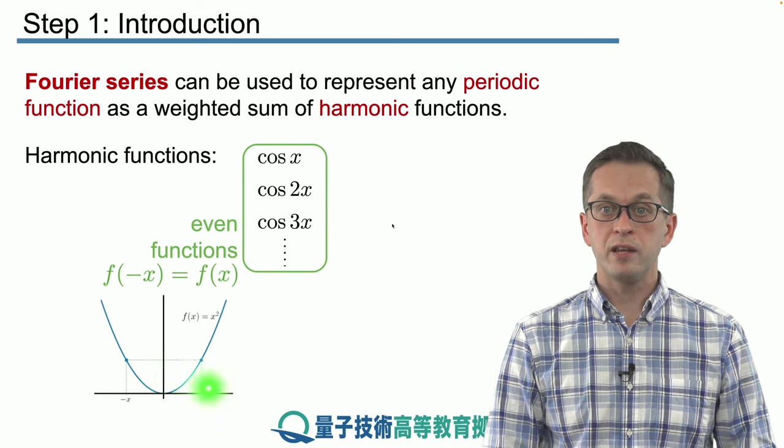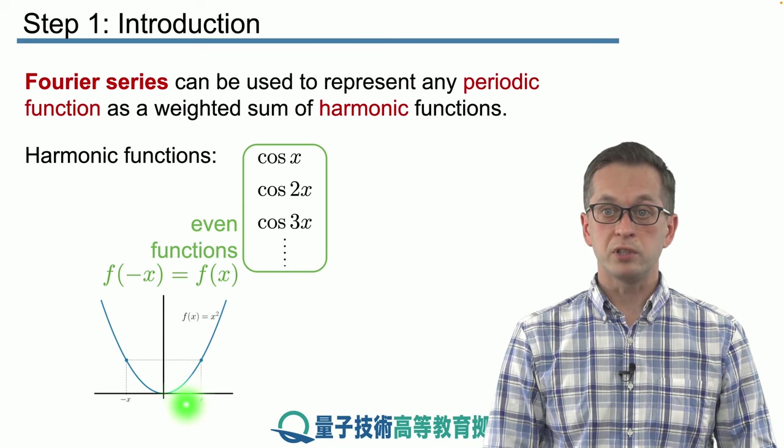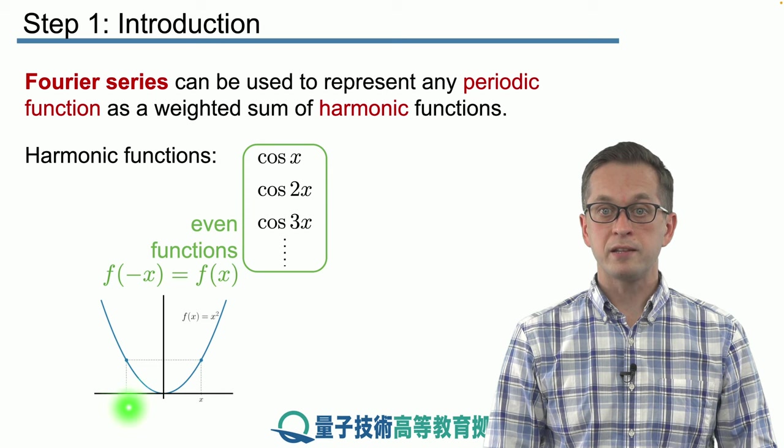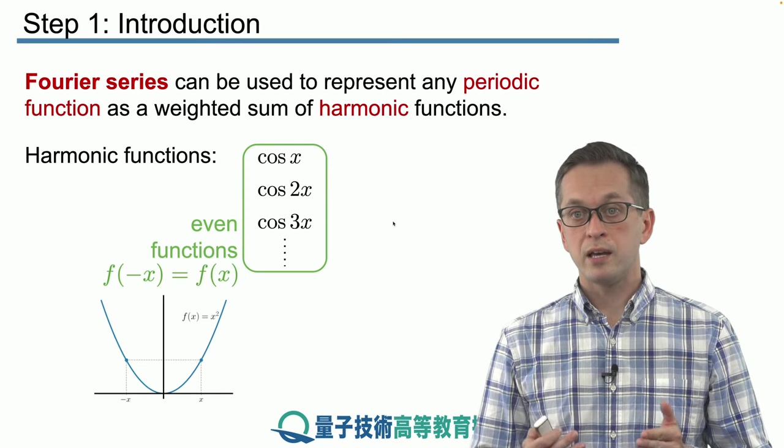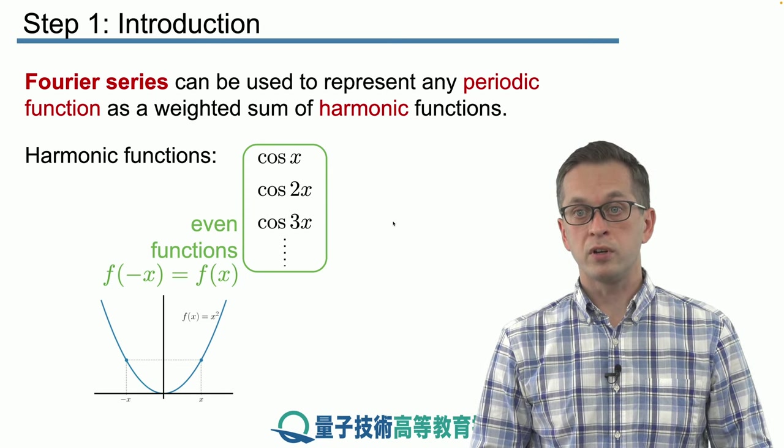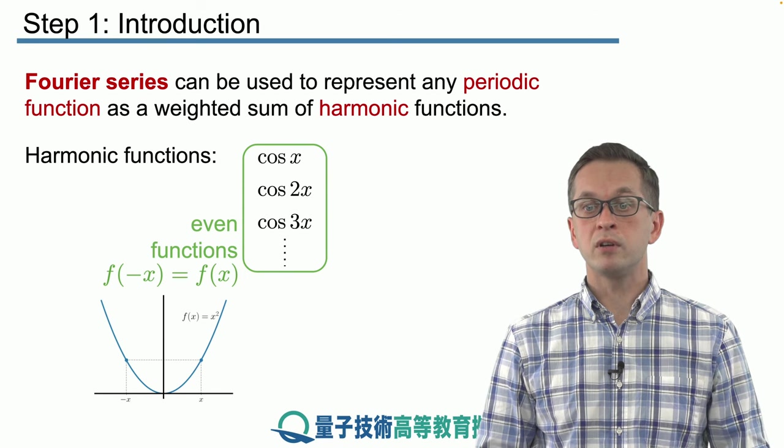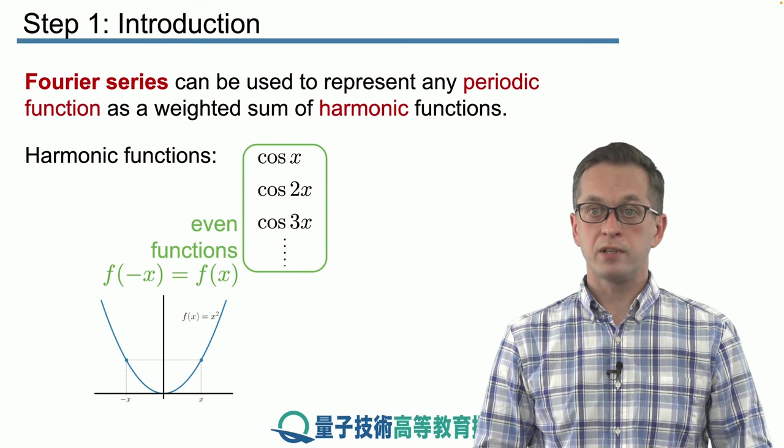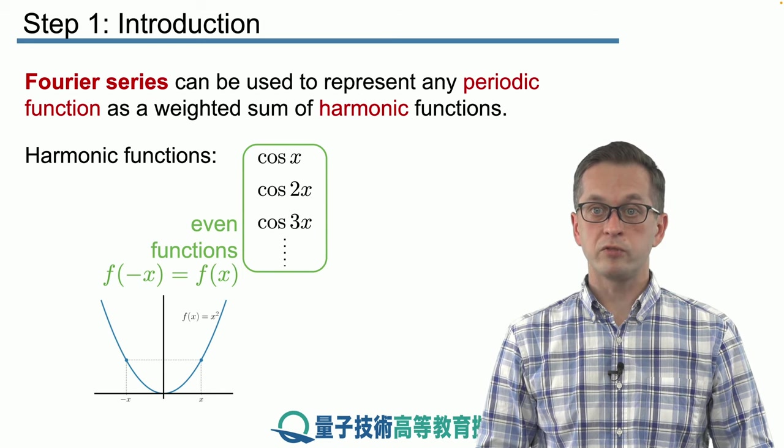And this is its graph over here. Here, it's very obvious that if I take the value of the function at position x, it's equal to the value of the function at position minus x. And if we take a superposition of even functions, the resulting function will be even as well. Therefore, we cannot represent any periodic function just in terms of cosines.